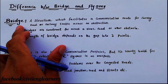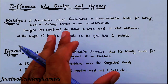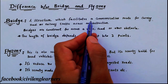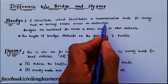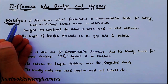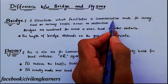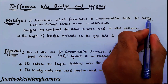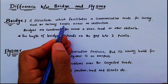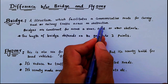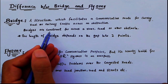So what is a bridge? A bridge is a structure which facilitates a communication route for carrying road or railway traffic across an obstruction. So a structure which facilitates a communication route for carrying road or railway traffic across an obstruction is called a bridge.